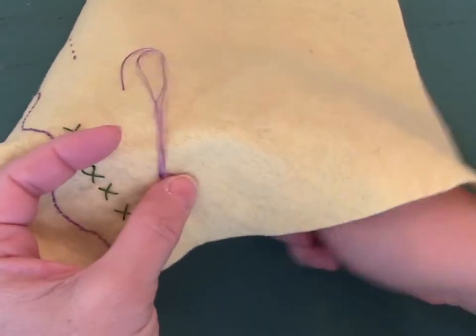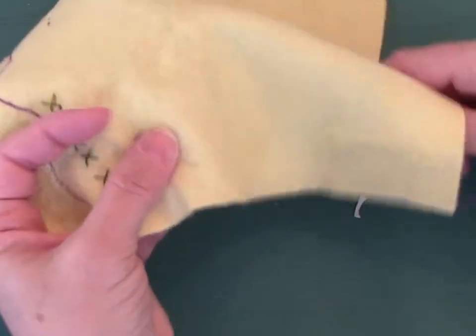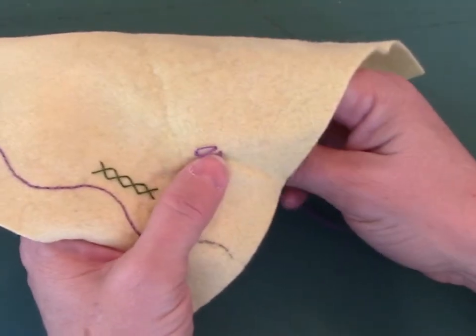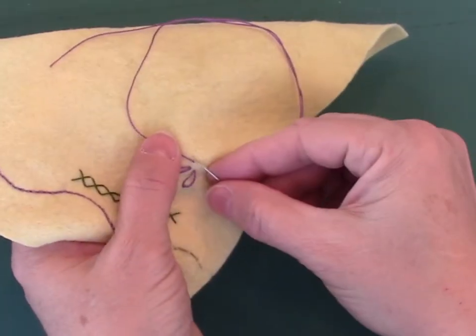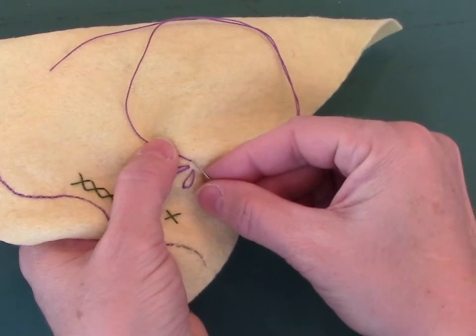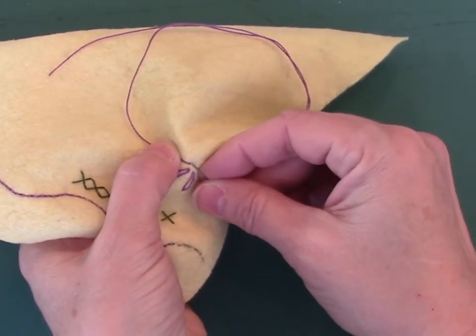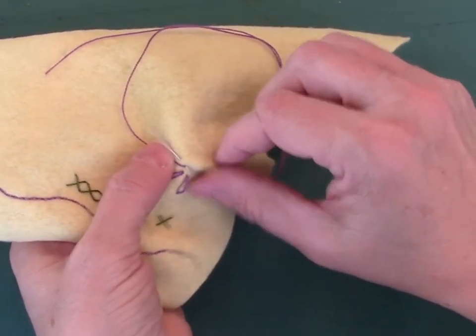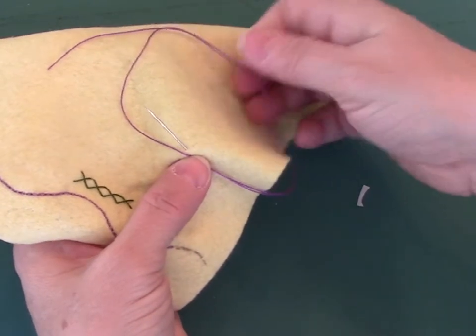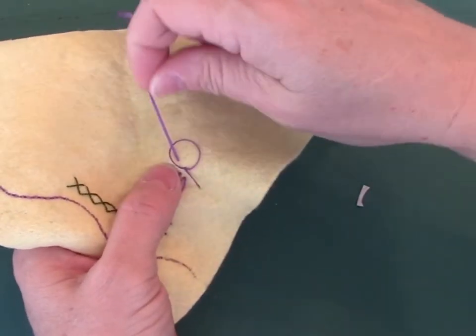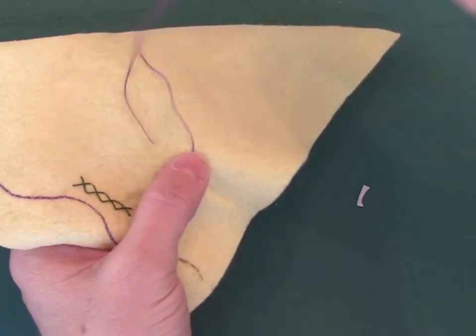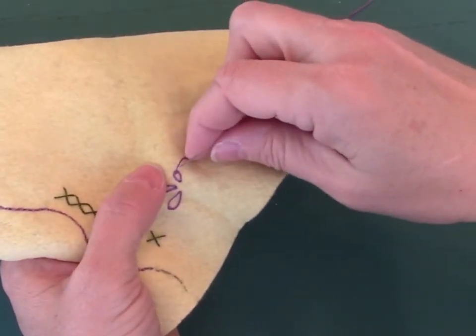You can vary the length of your petals—they can be really small. Again I'm going down right next to where I came up, and this time I'm making my petal much shorter. My thread is under my needle. You don't have to pull it up like that but it's easier to show you. Pull it up, and tack it down.